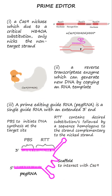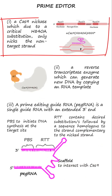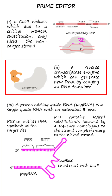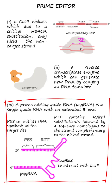Prime editors utilize: one, a Cas9 nickase, which is formed by a critical H840A substitution and only nicks the non-target strand; two, a reverse transcriptase enzyme that can generate new DNA by copying an RNA template; and three, a prime editing guide RNA, pegRNA.